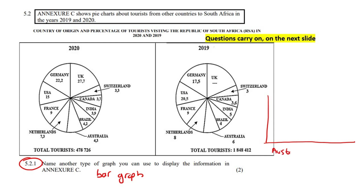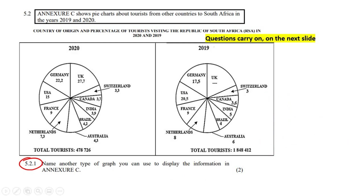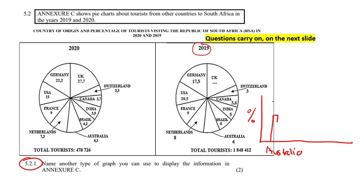For example, you could have Australia over here, and then India, and then you would have two bars next to each other — one for 2019 and one for 2020 — and do the same for each country. Because we're using two bars next to each other, we also call that a compound bar graph. The numbers on the left would be your percentages, and you'd show each country's 2019 bar immediately next to its 2020 bar, with a small gap between countries.